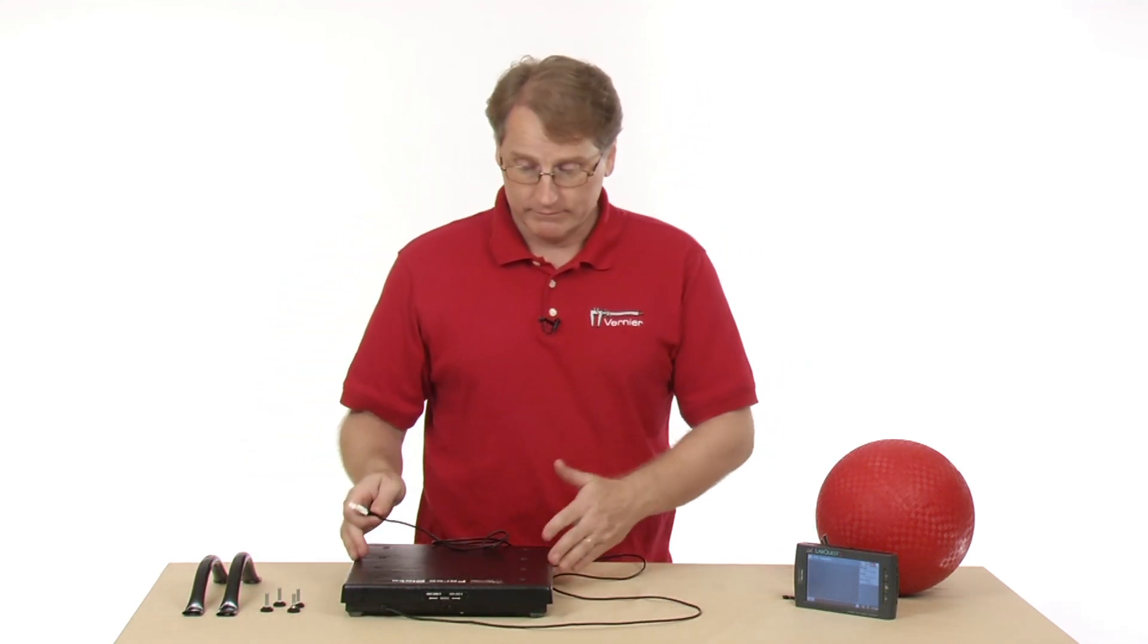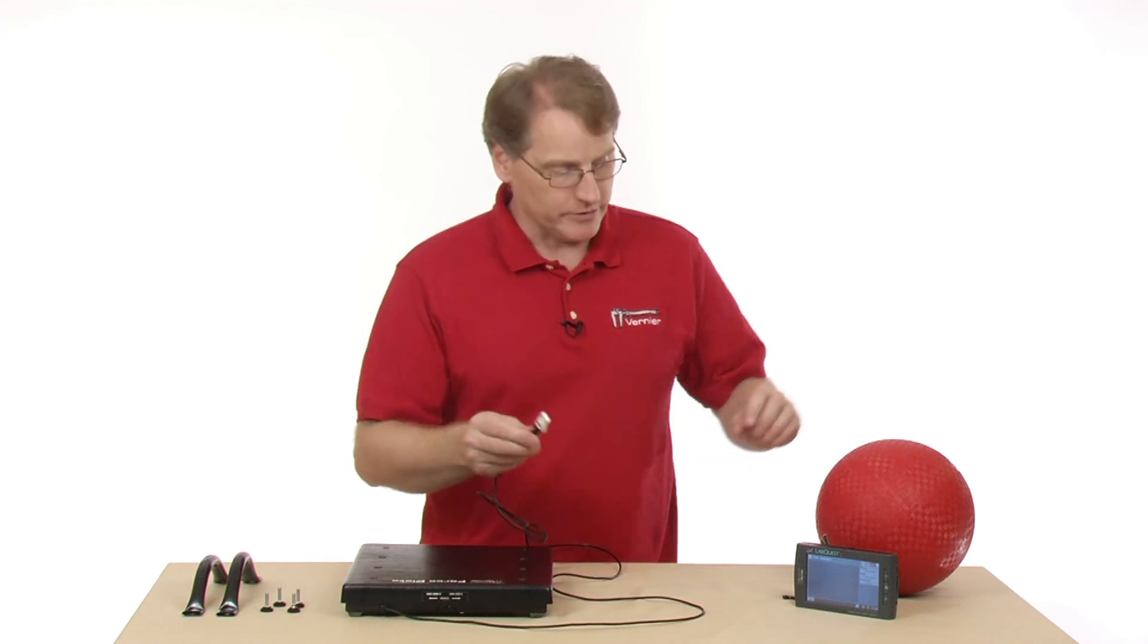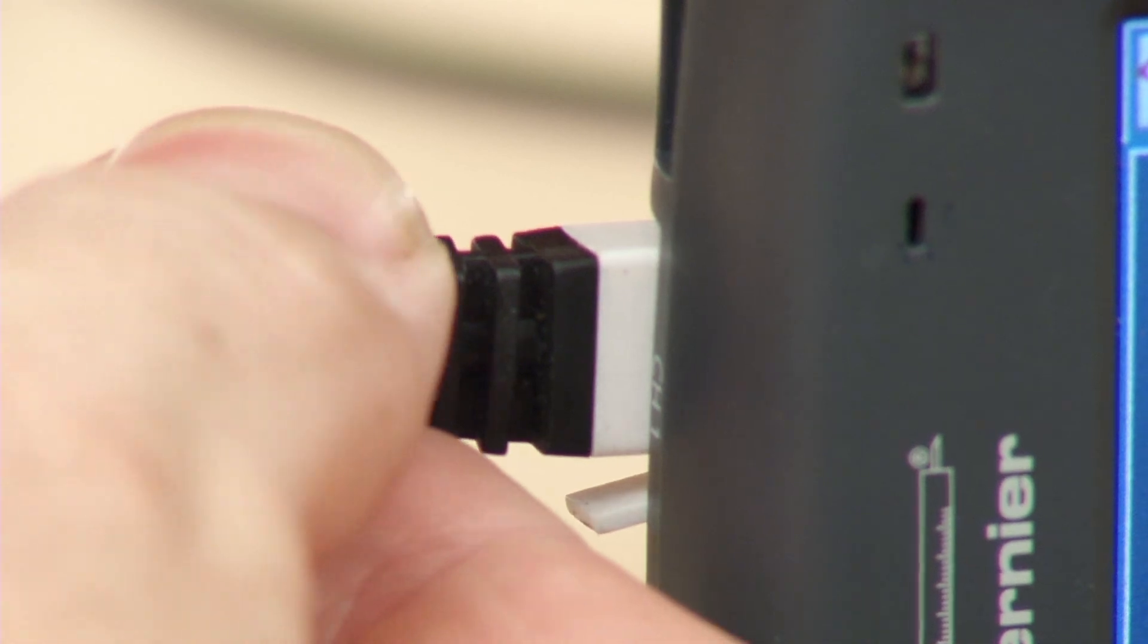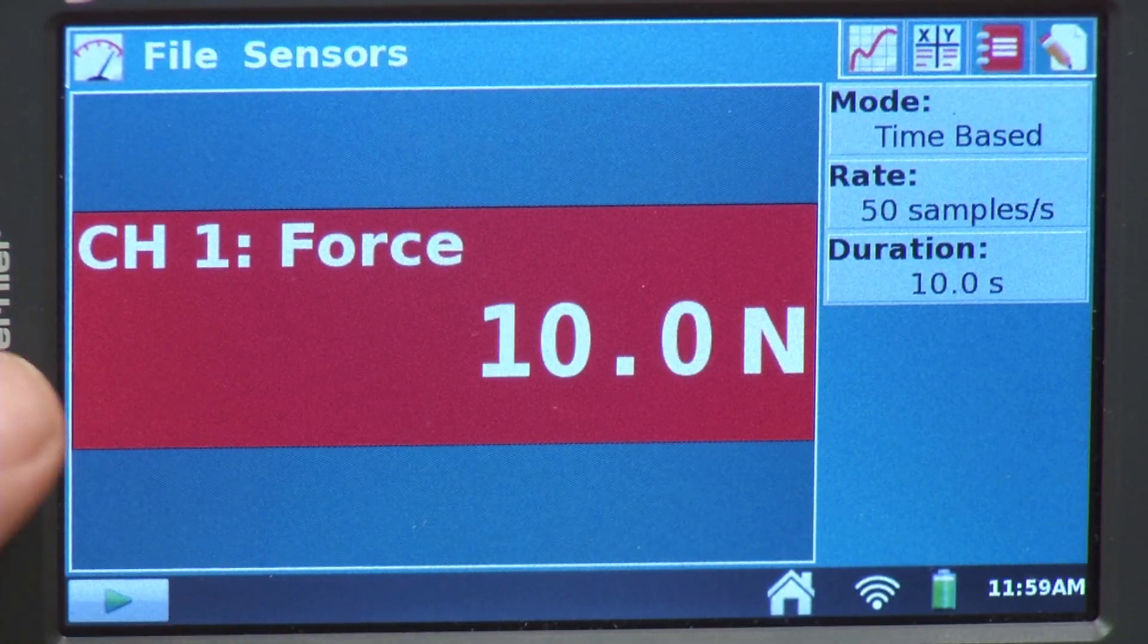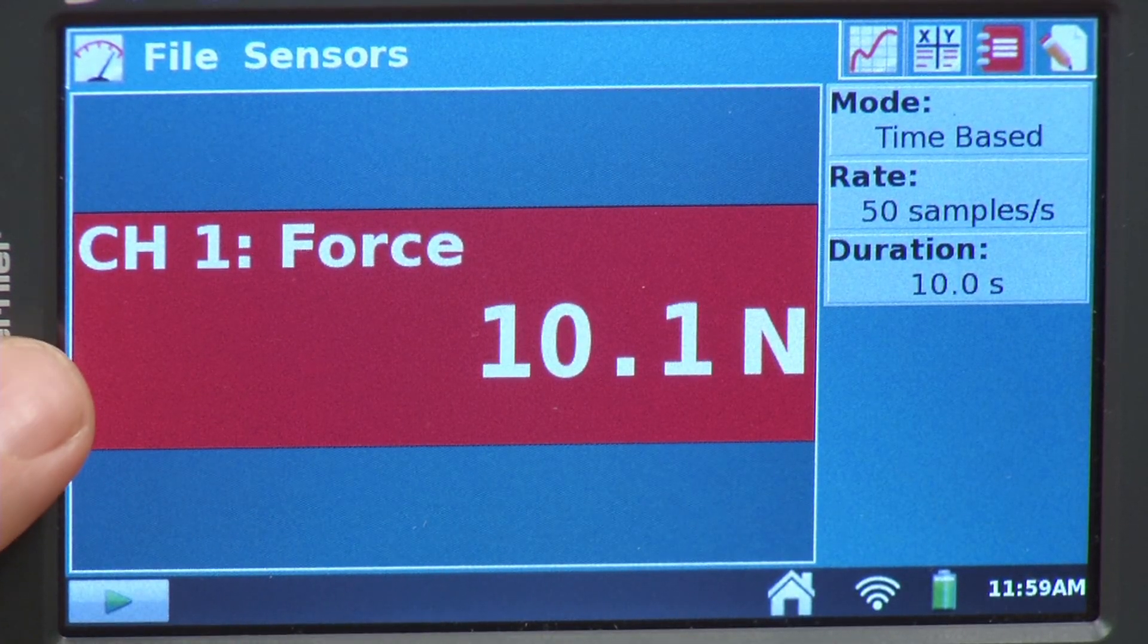The force plate is an analog sensor, so I need to plug it into one of the analog ports, like channel one. Now that we have it plugged in, we see that we have a force there on channel one, and we're getting a reading there.